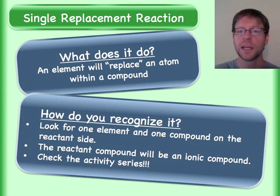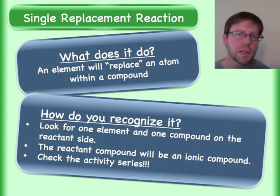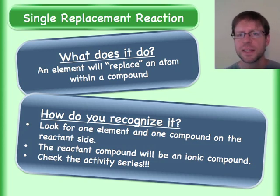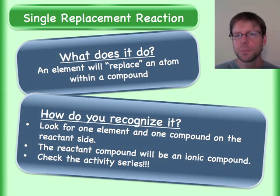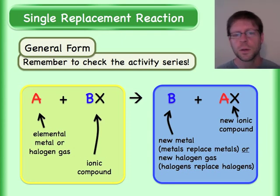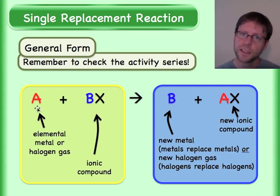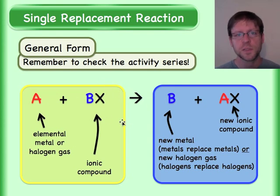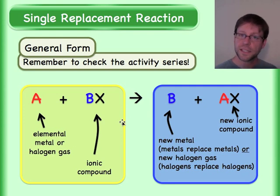There's a note that says to check the activity series, so we need to talk a little bit about what the activity series is. Here's the general form for this type of reaction — you're going to have either your metal or your halogen here, and then some sort of ionic compound sitting over here.